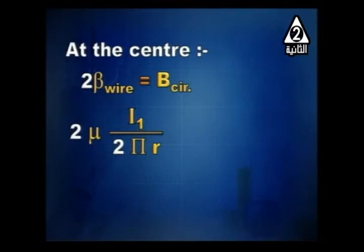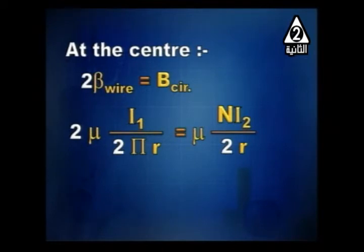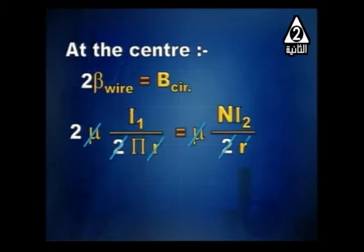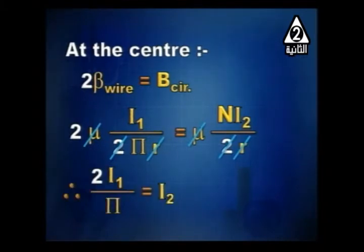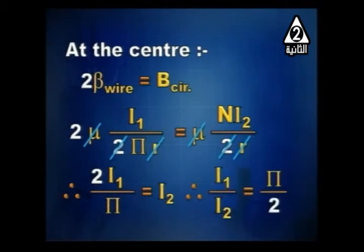At the center the distance equals the radius. Setting the fields equal: 2μI1/(2πr) = μI2/(2r). Permeability cancels out, and radius cancels out. So 2I1/π = I2, which gives I1/I2 = π/2.